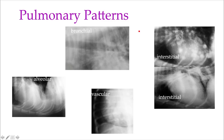We have four main patterns: bronchial, interstitial, alveolar, and vascular. All lung diseases will start from bronchial or peribronchial, then become interstitial, and eventually become alveolar.